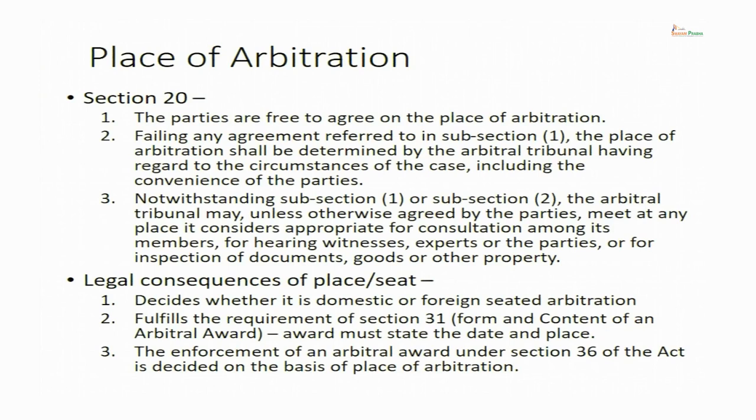There are many choices which parties can make and many choices which the tribunal can make. A tribunal can choose adversarial procedure — the procedure followed in courts where parties are adversaries. Parties or the tribunal may adopt inquisitorial procedure, or some ad hoc procedure depending on the nature of the dispute, or institutional procedures may be adopted. You are free to devise your own procedure or to adopt the procedure of institutions. So, the first provision, section 19, gives freedom to parties to choose procedural law.